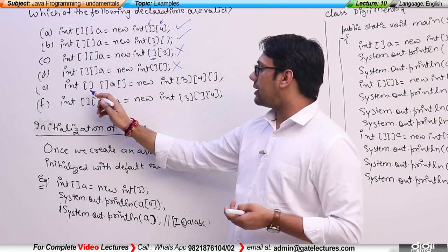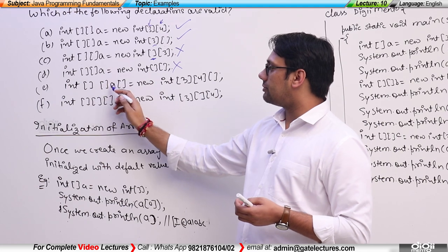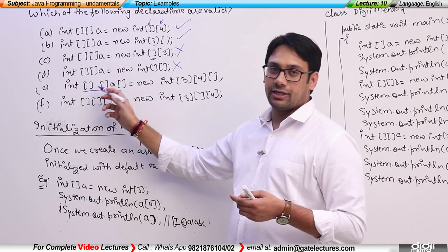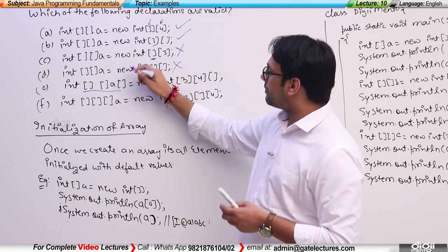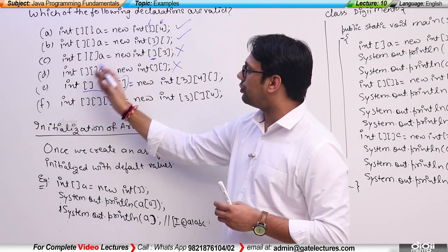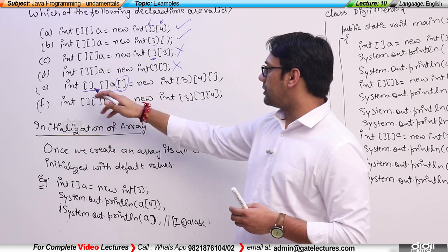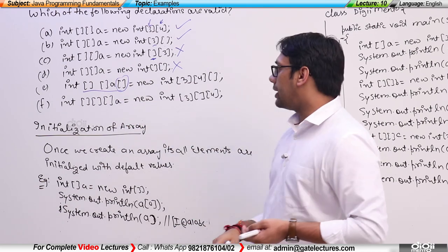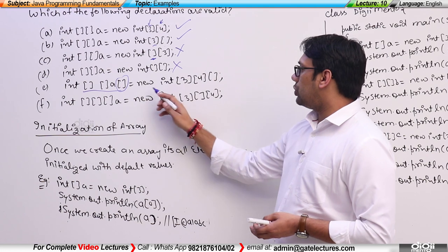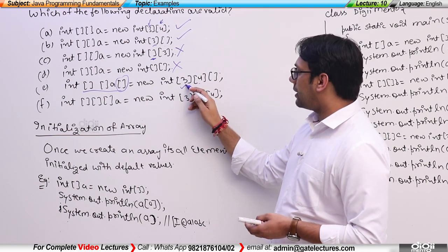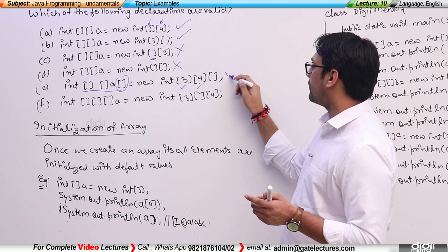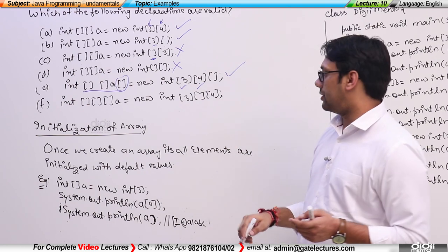Now we can also declare a 3-dimensional array. The bracket pairs can be placed before or after 'a'. Since we have 3 pairs of brackets, it is a 3-dimensional array. When we say new int[3][4], we are specifying the number of blocks and number of rows, while the number of columns is not specified — this is also valid.